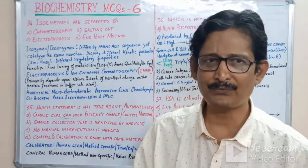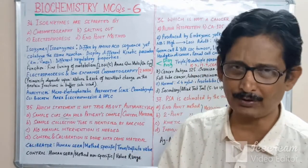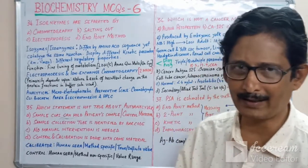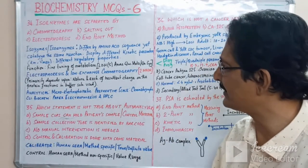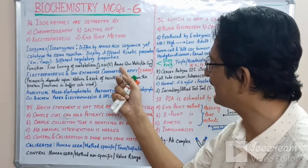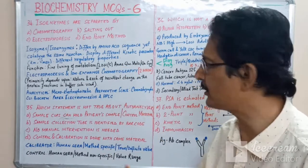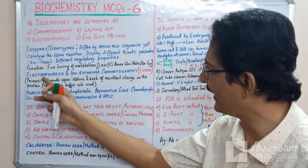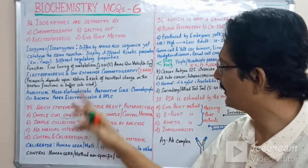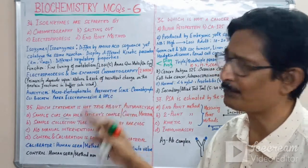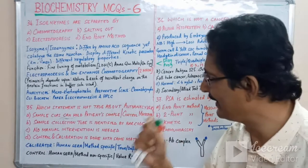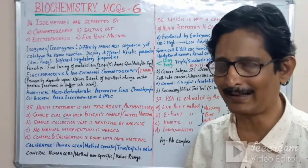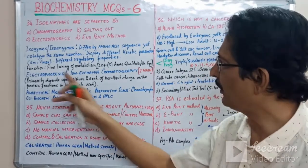Their function is fine-tuning of the metabolic system. For example, LDH has five isozymes performing roles like anaerobic glucose metabolism and glucose synthesis. The two main methods of separation of isozymes are electrophoresis and ion exchange chromatography.